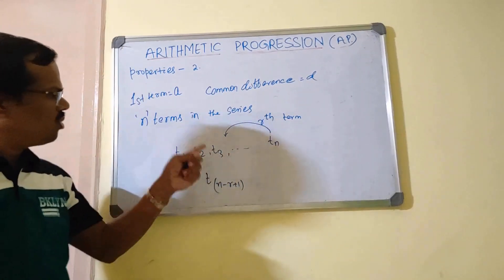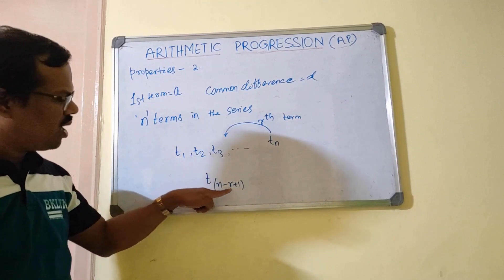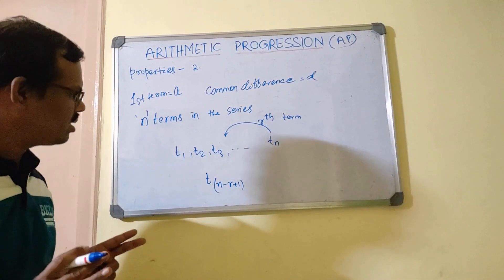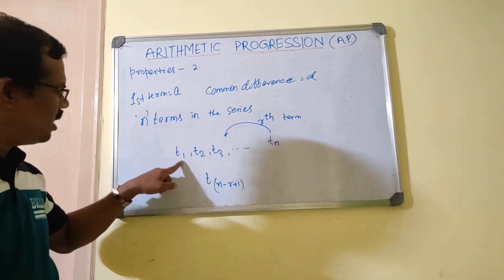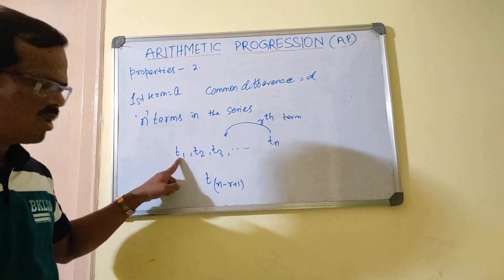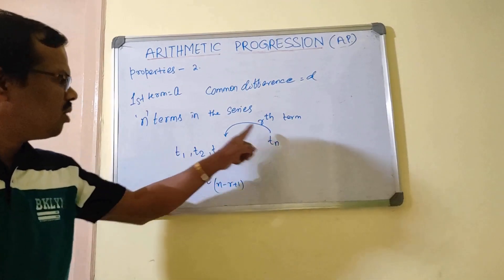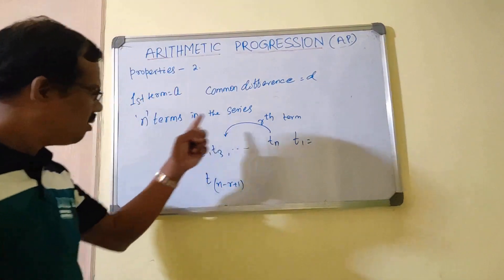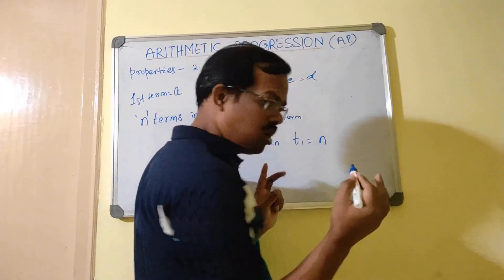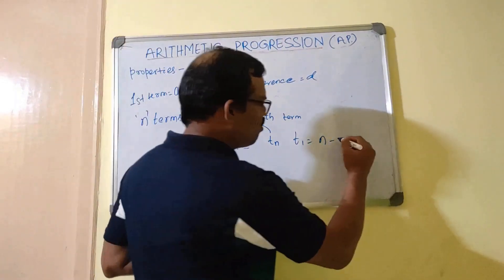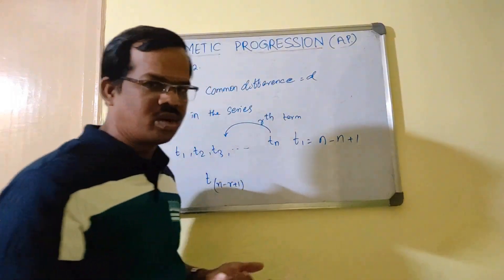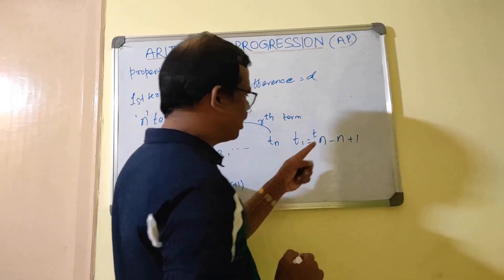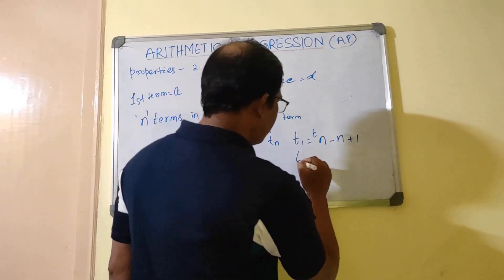The rth term from the right will be the same as the (n minus r plus 1)th term from the left. This is not very rocket science — I will decode it. The first term, t1, is the nth term from the right. If I substitute r = n, I get n minus n plus 1, which equals 1. So that confirms this is the first term, t1.